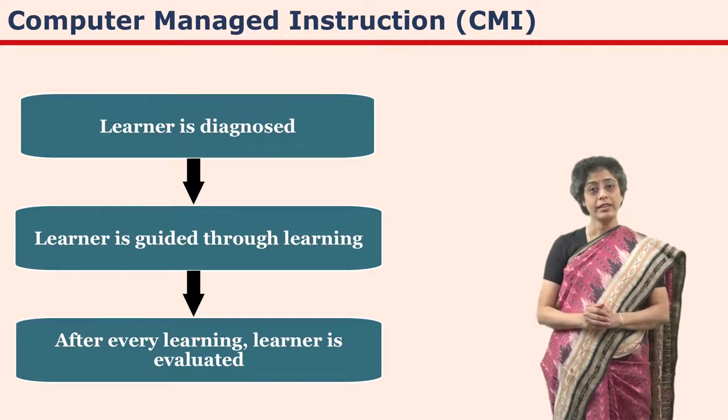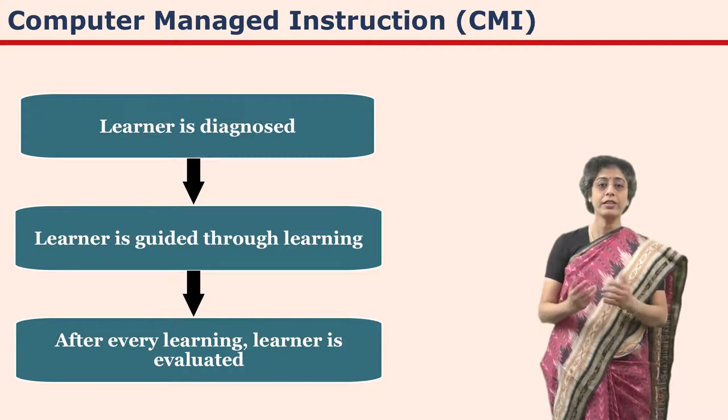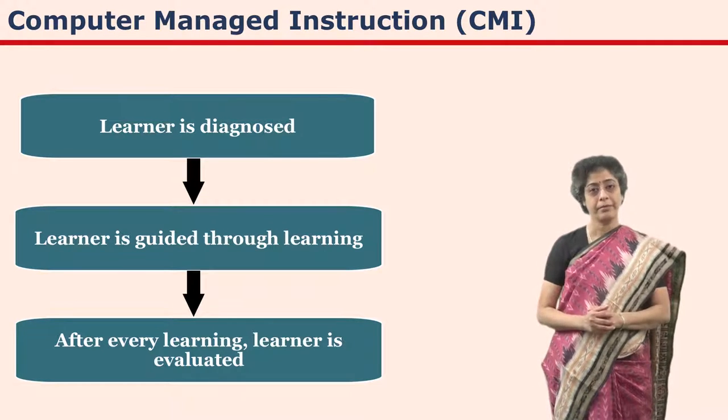CAI, CAL, and CBT are subsystems of CMI.